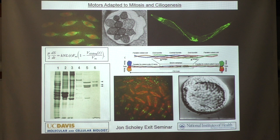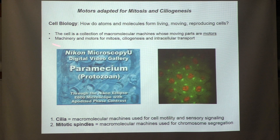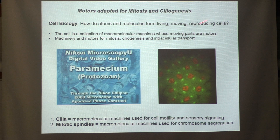I'm going to talk about motors adapted to mitosis and ciliogenesis. I work in cell biology, meaning how do atoms and molecules form living, moving, reproducing cells. Part of the answer is that we now think of the cell as a collection of macromolecular machines whose moving parts are motors — proteins that convert one form of energy into force and motion.